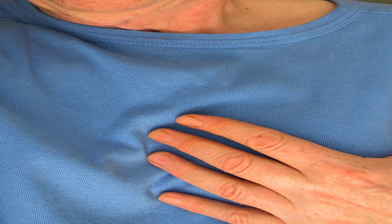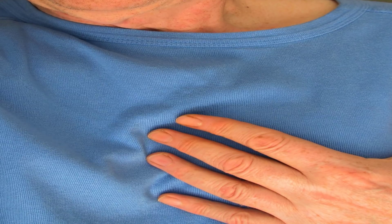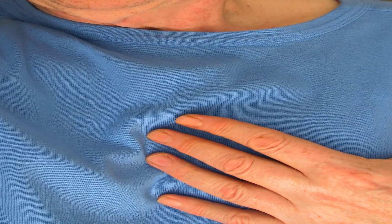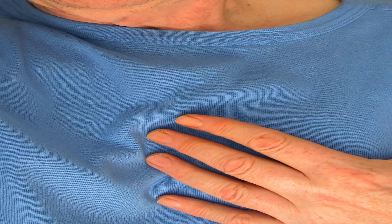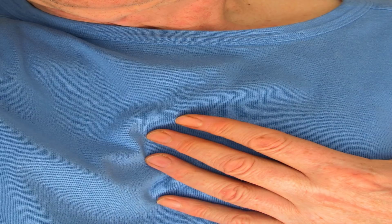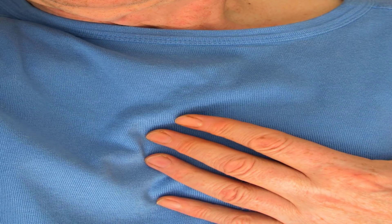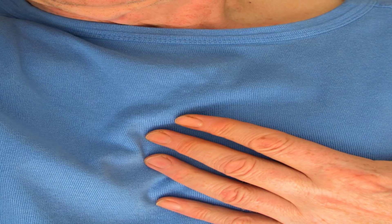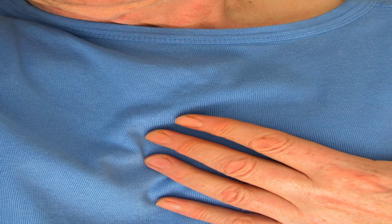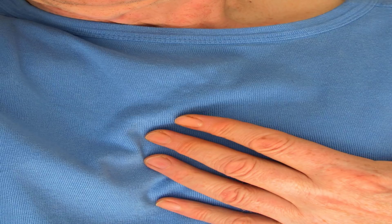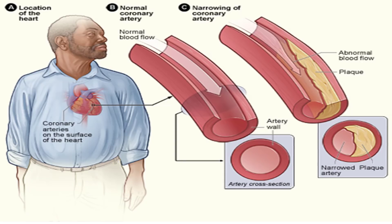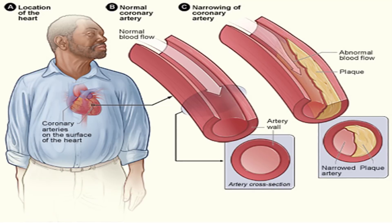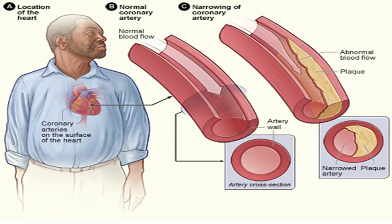High blood glucose levels that aren't managed can increase the amount of plaque that forms within the walls of the blood vessels, hindering or stopping the flow of blood to the heart. If you have diabetes, you can reduce your risk of heart disease by managing your blood sugar carefully, following a diabetes-friendly diet rich in fiber and low in sugar, fat, and simple carbohydrates, maintaining a healthy weight, and quitting smoking.